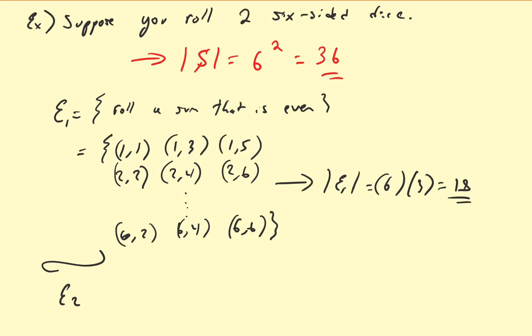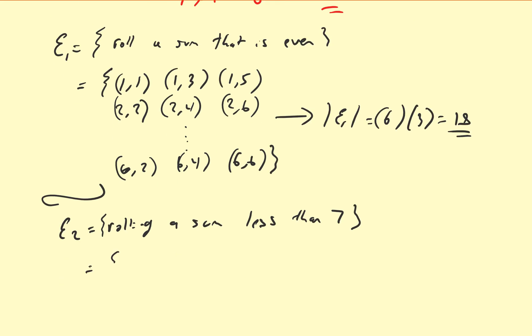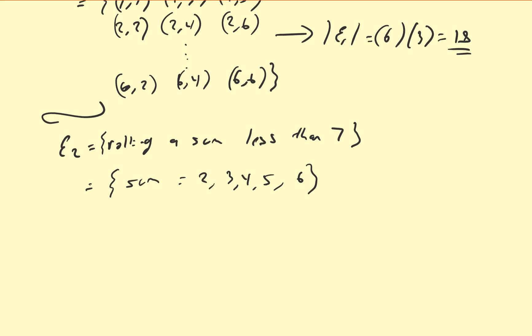Let us also assume that we're interested in another event, E2 — the event of rolling a sum less than 7. So we're allowing the sum to be equal to 2, 3, 4, 5, or 6. We start at 2 because that's achieved by the event 1-1. The only way of getting 2 is 1 and 1. To get 3: 1-2 and 2-1. To get 4: 1-3, 2-2, and 3-1.